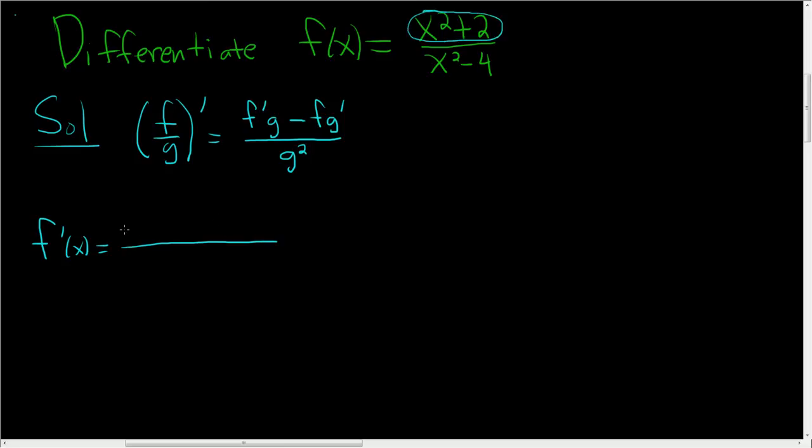that's the first piece, is 2x times the second piece, so x squared minus 4, minus the first piece, so x squared plus 2, times the derivative of the second piece, so times 2x, all divided by x squared minus 4, and that quantity is being squared.